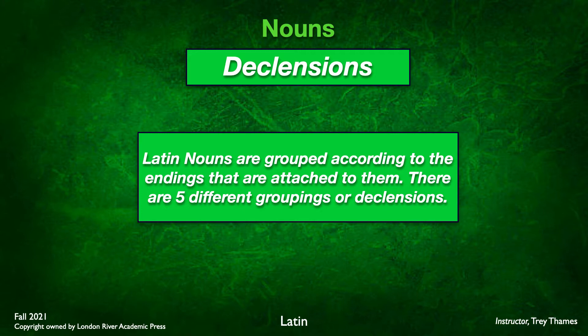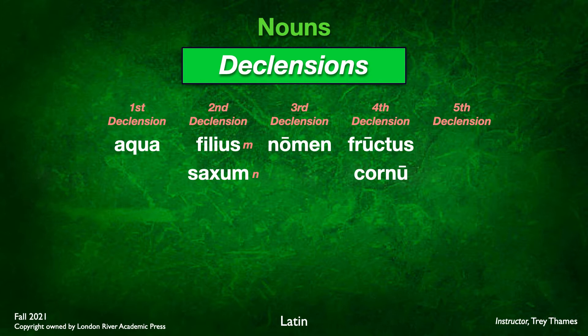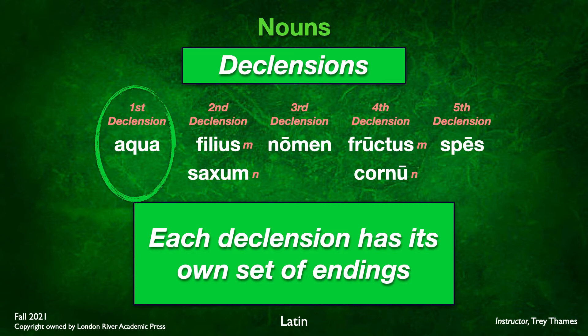There are five different groups or declensions. This chapter we're only going to deal with first declension; the rest will be coming in the next several chapters. First declension uses the paradigm word aqua. Second declension has a masculine and a neuter: filius and saxum. Third declension: nomen. Fourth declension: fructus for masculine and cornu for neuter. Fifth declension: spes.